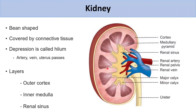The kidney is a bean-shaped organ in our body. There is a capsule in the outer layer, which is made up of connective tissue. In the center, there is a small depression called the hilum. Through the hilum pass the artery, vein, and ureter.